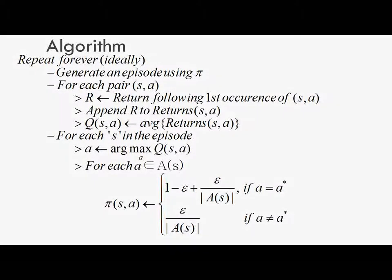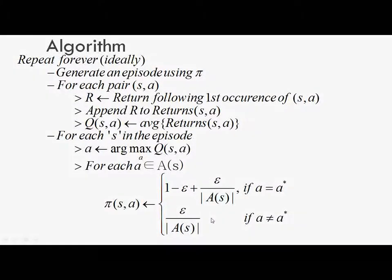Here is the step-by-step procedure. Once initialization is done, repeat forever: generate an episode using pi. For each pair s and a, let R equal the return for the first occurrence of s and a. Append R to returns for state-action pair s and a. Assign the average of returns for state-action pair s and a to the action value function Q(s, a). For each state s in the episode, calculate the greedy or optimal action, and for each action in that state assign the probability of occurrence. This is the overall on-policy Monte Carlo control algorithm.